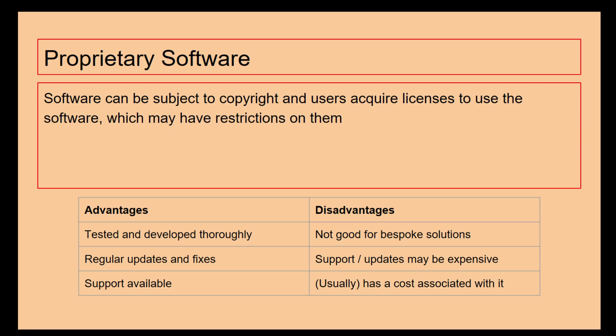The advantages of proprietary software is that because people have either paid for it or rely on it a lot, it's tested and developed thoroughly. So if there are any bugs, they get ironed out and hopefully removed before the software is available for download and use. There are regular updates and fixes, which means that if there are bugs or any requested features, these come about quite quickly for the community to use, and there's usually support available. If people are buying into software, they want to be able to make sure that help is ready whenever they need it.